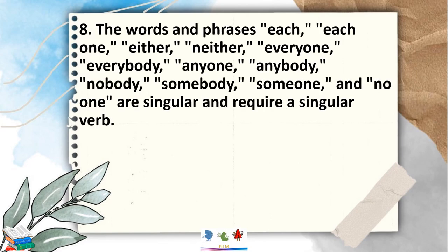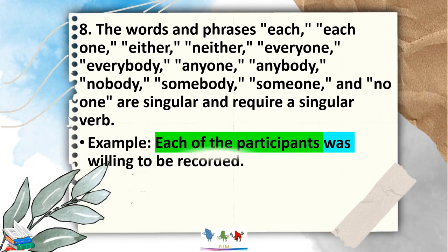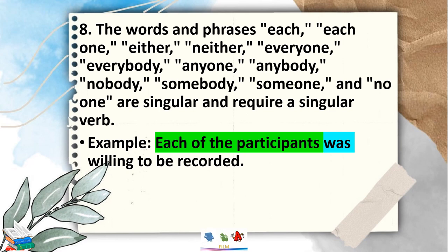Rule 8: the words and phrases each, each one, either, neither, everyone, everybody, anyone, anybody, nobody, somebody, someone, and no one are singular and require a singular verb. For example, 'Each of the participants was willing to be recorded.' Even though there is an 's' on 'participants,' with the use of 'each,' we follow the rule and use a singular verb: 'was.'